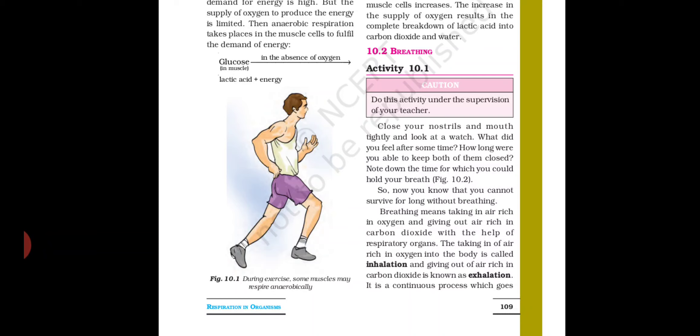Either we inhale or exhale — both cannot happen at the same time. Now in Activity 10.1, it is written: close your nostril and mouth tightly and look at a watch. What did you feel after some time? How long were you able to keep both closed? Note down the time for which you could hold your breath. I had given you this activity yesterday. Nostril means the hole under the nose. Close your nostril as well as your mouth and count how long you can stop breathing.